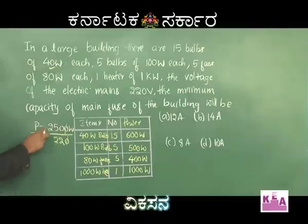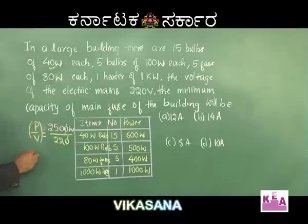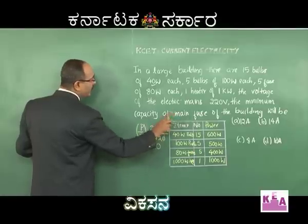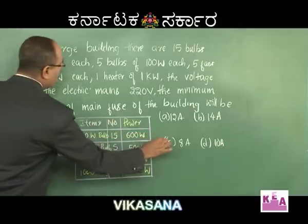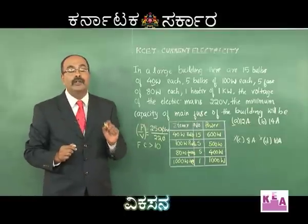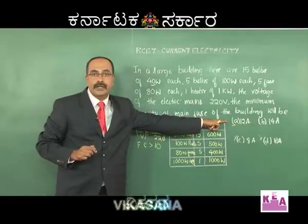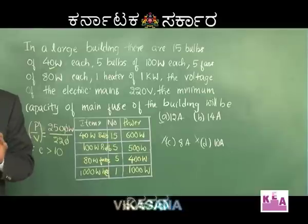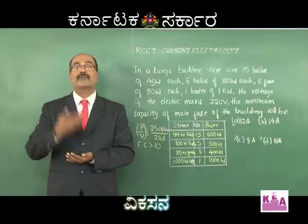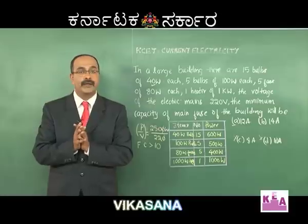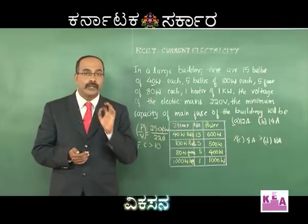P / V gives the minimum fuse capacity. So fuse capacity must be slightly greater than 10 amperes. Among the four options, 8 and 10 are ruled out. The nearest option greater than 10 is 12 amperes. Even 14 would work, but it is always advisable to take the nearest value. Therefore option A, 12 ampere fuse, is correct.